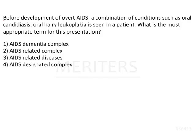The question given here is: before development of overt AIDS, a combination of conditions such as oral candidiasis and oral hairy leukoplakia is seen in a patient. What is the most appropriate term for this presentation? That is, what is the term used to denote such a presentation in an AIDS patient?